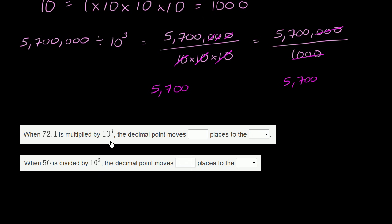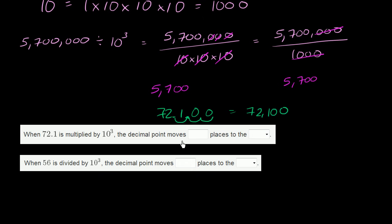When 72.1 is multiplied by 10 to the third, the decimal point moves how many places in which direction? Remember, multiplying by 1,000 gives you a larger number, so the decimal point moves to the right. 72.1 multiplied by 10 once moves the decimal once to get 721. Multiplying by 10 three times moves it three places to the right — throwing in zeros as needed — giving 72,100. The decimal point moves three places to the right.